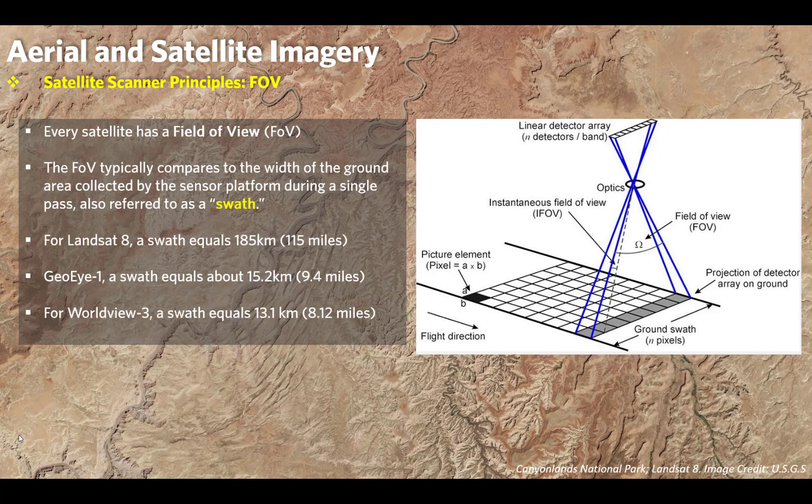Every satellite has a field of view, which corresponds to the width of the ground area collected by the sensor platform during a single pass — also referred to as a swath. The swath width for Landsat 8 is 185 kilometers. For GeoEye, the swath width is 15.2 kilometers, and for WorldView, the swath is 13.1 kilometers. Not every satellite has exactly the same flight characteristics or parameters.